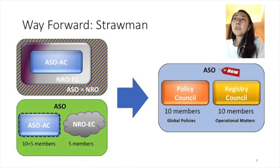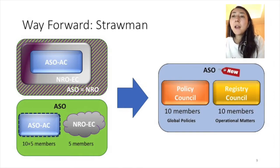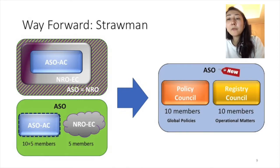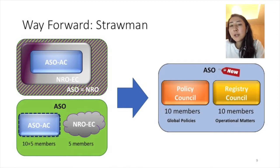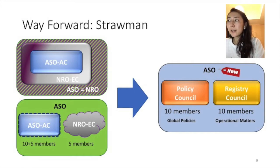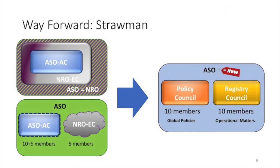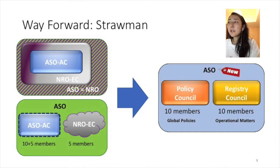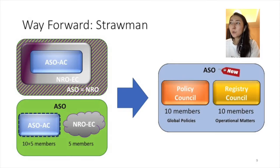As a way forward on the strawman, the left-hand slide shows the current situation of how the ASO works today and its composition — consisting of the ASO AC members, 15 members in total, and NREC five members. As a way to provide better clarity, maybe we can name these members as members of the Policy Council and Registry Council, so it's very visible from the outside what roles they each play. We would have 10 members each on the Policy Council and Registry Council, where the Policy Council focuses on policy matters around global number resources, and the Registry Council focuses on representing the ASO on operational matters.